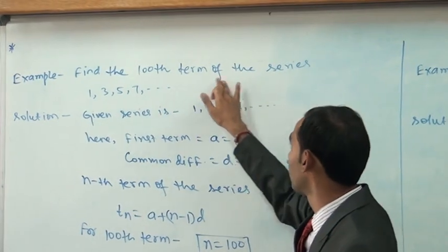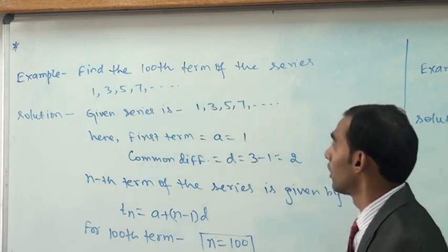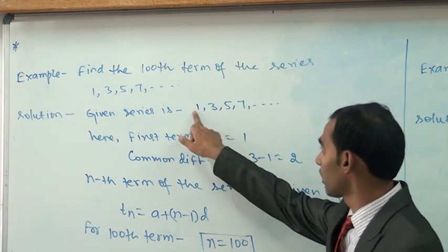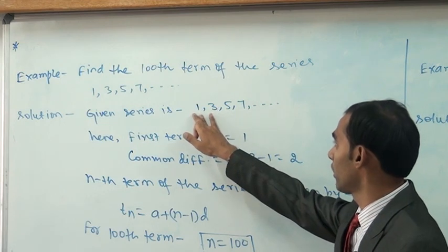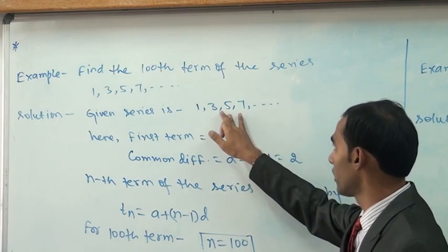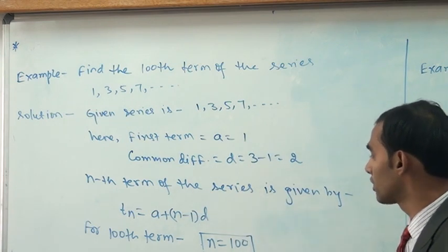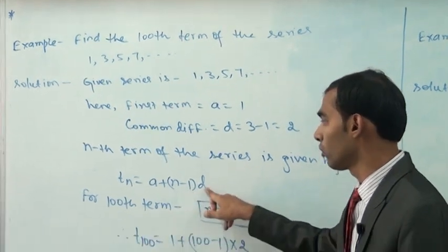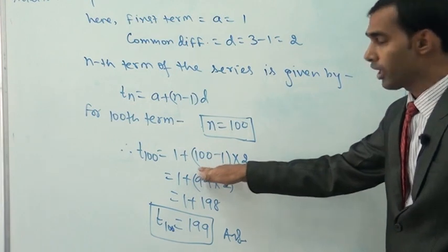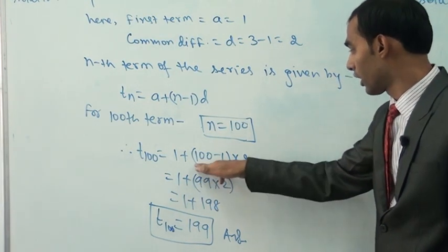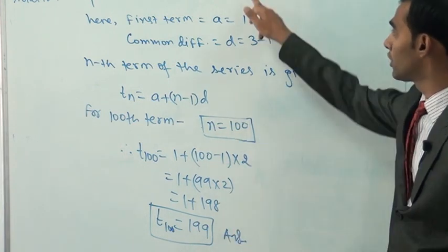Another example: Find the 100th term of the series 1, 3, 5, 7, up to n terms. Here the first term a = 1. The common difference: 3-1 = 2, 5-3 = 2, 7-5 = 2. Hence this series is an arithmetic progression. Any term is given by tn = a + (n-1)d. For the 100th term, n = 100: t100 = 1 + (100-1)×2 = 1 + 99×2 = 1 + 198 = 199. This is the 100th term of this arithmetic progression.